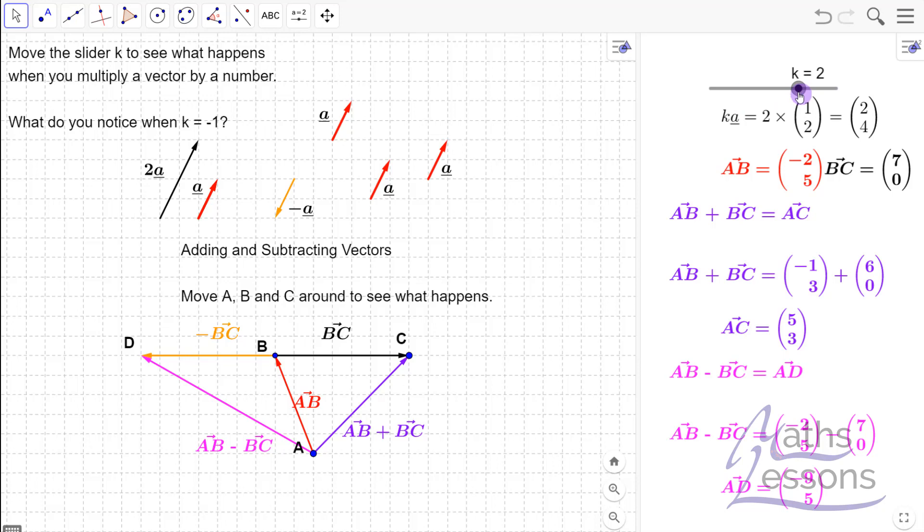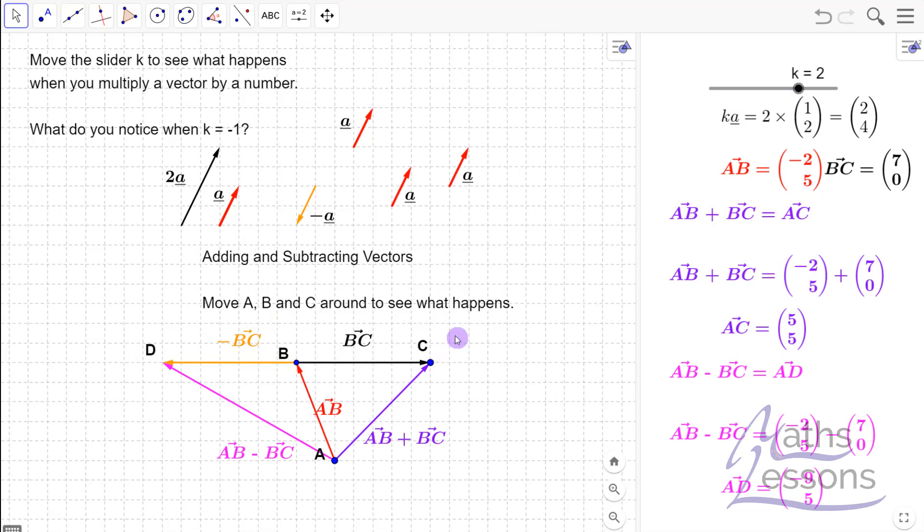Right, if you want to add two vectors, here we go. We're going to add this vector AB and this vector here BC. Just look at these two bits here. So AB goes 1, 2, so it's minus 2 in the x direction, 1, 2, 3, 4, 5—look, minus 2, 5.